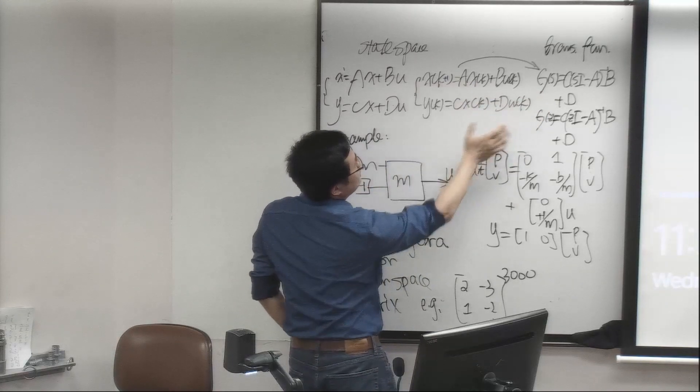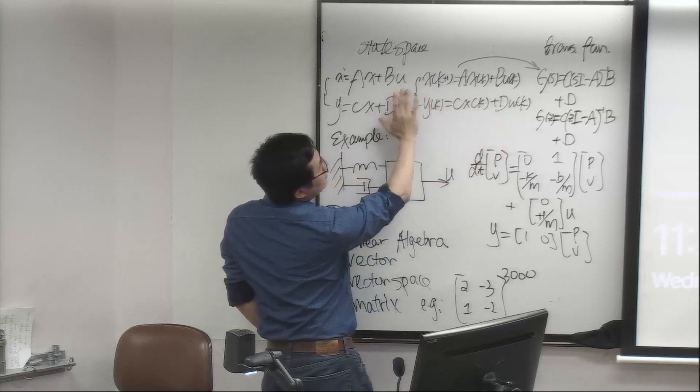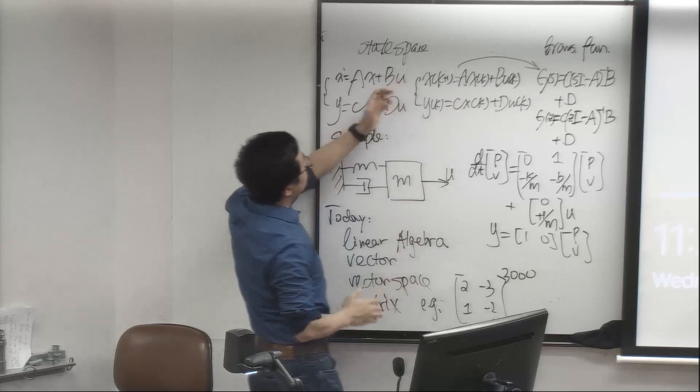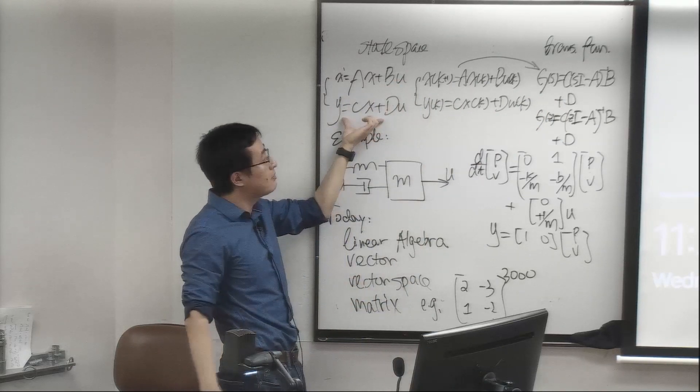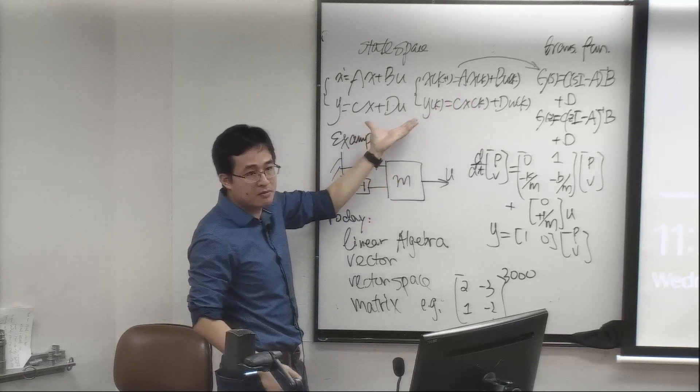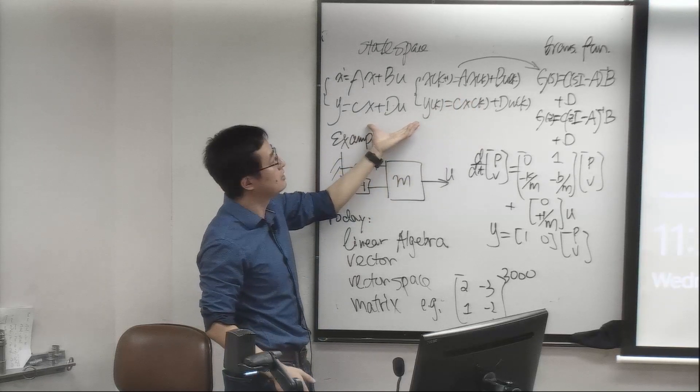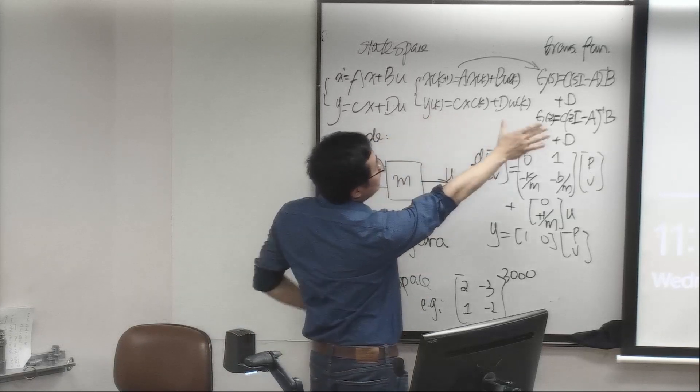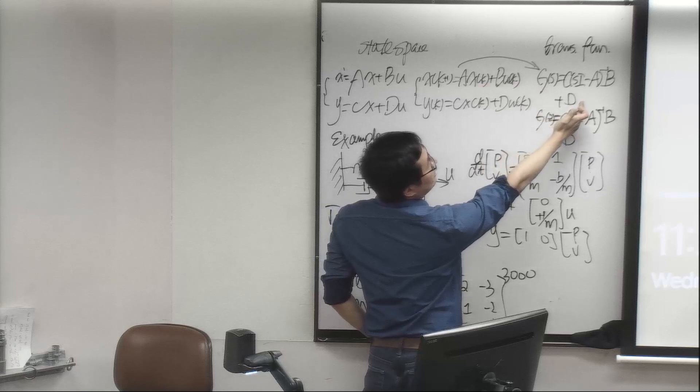That's the difference between these two. And then there are ways to go from one way to another. We talked about if you have a state-space system, A, B, C, D, whether it's in continuous time or discrete time system, both are really important for practical control designs. If you have the state-space formulations, then it is very easy to go from one side to another.